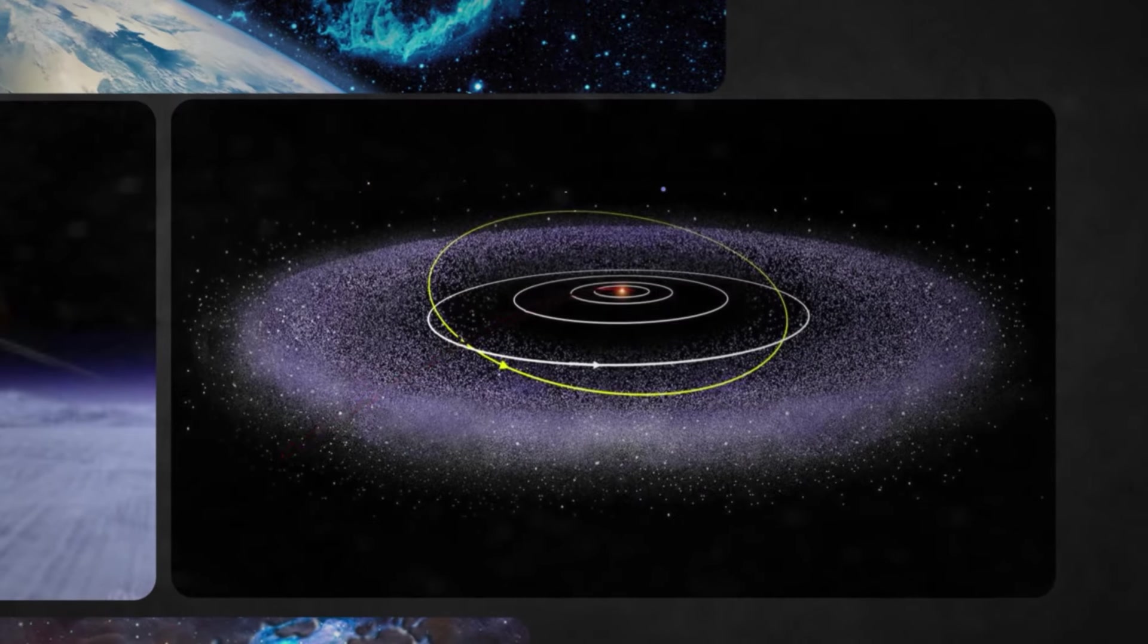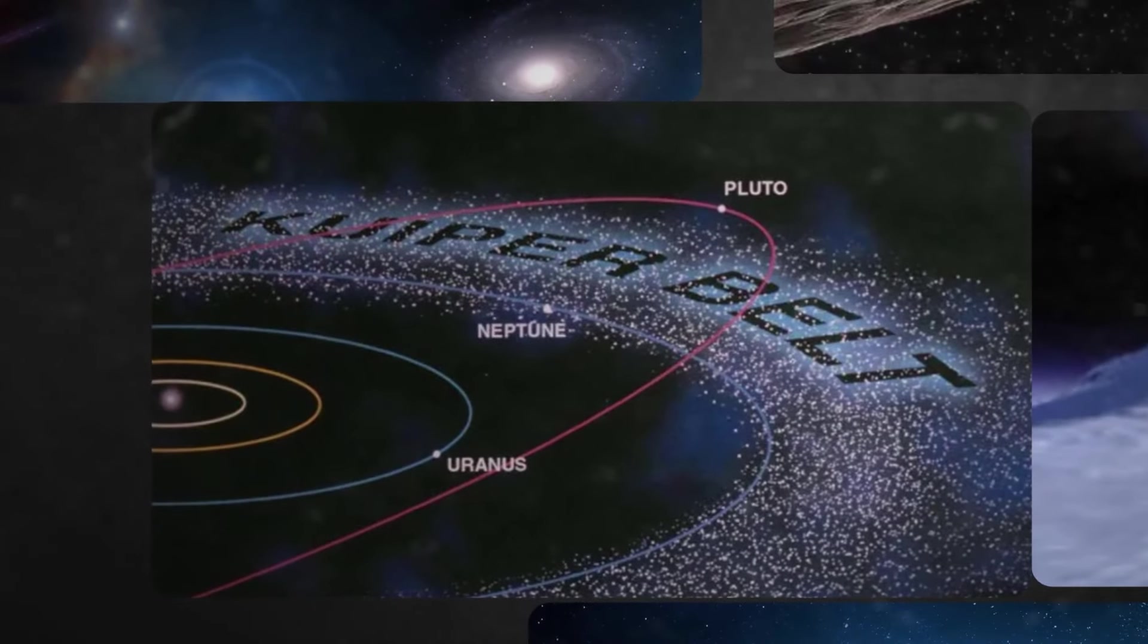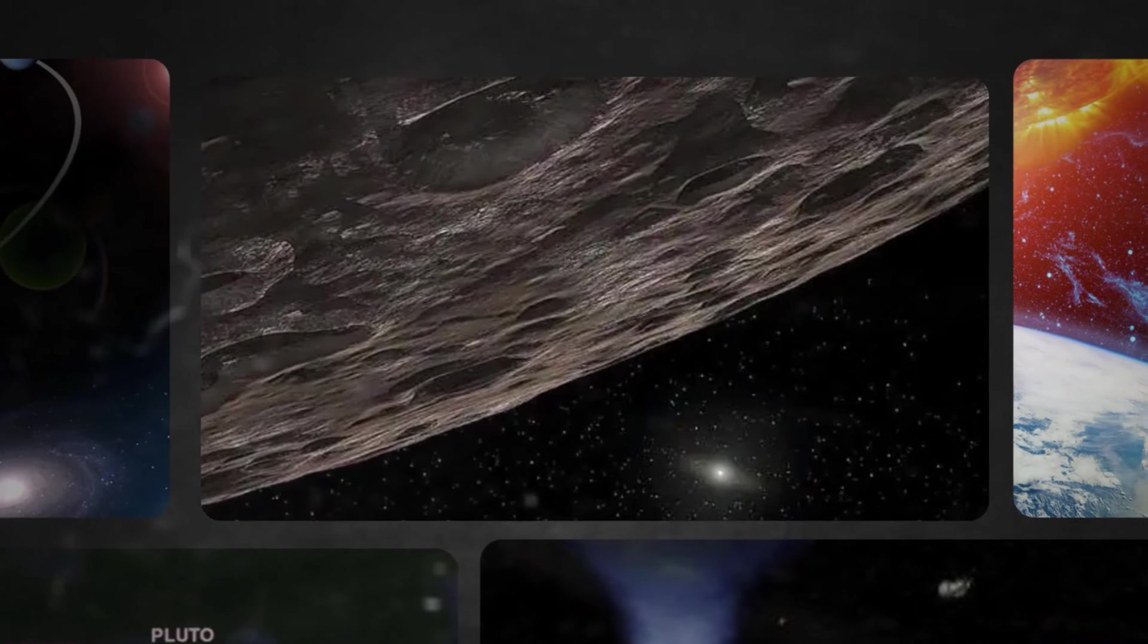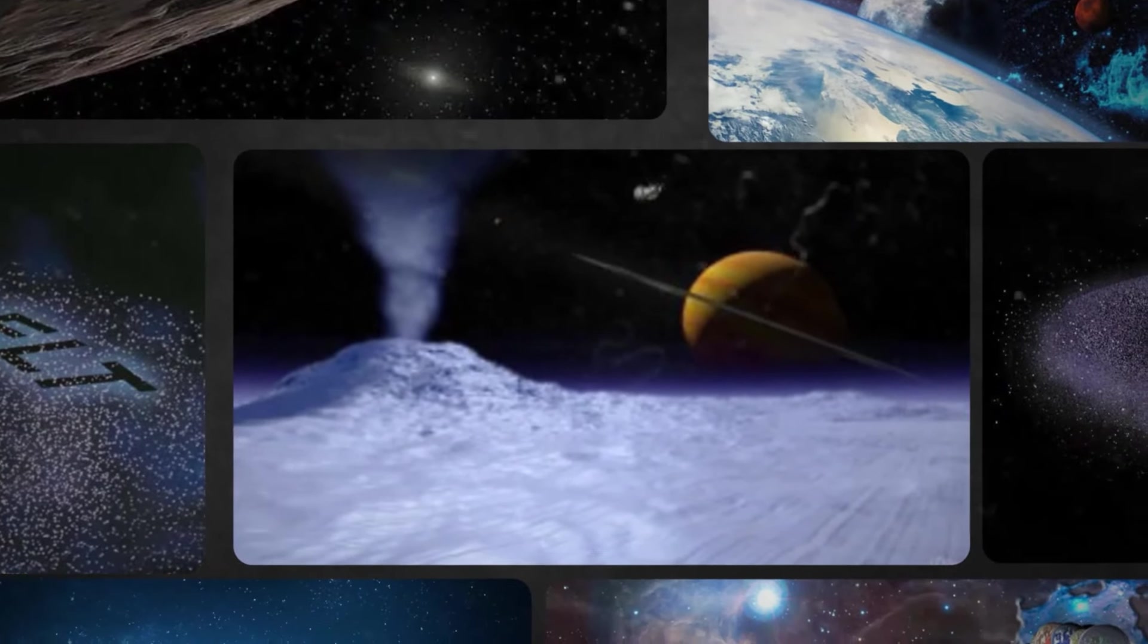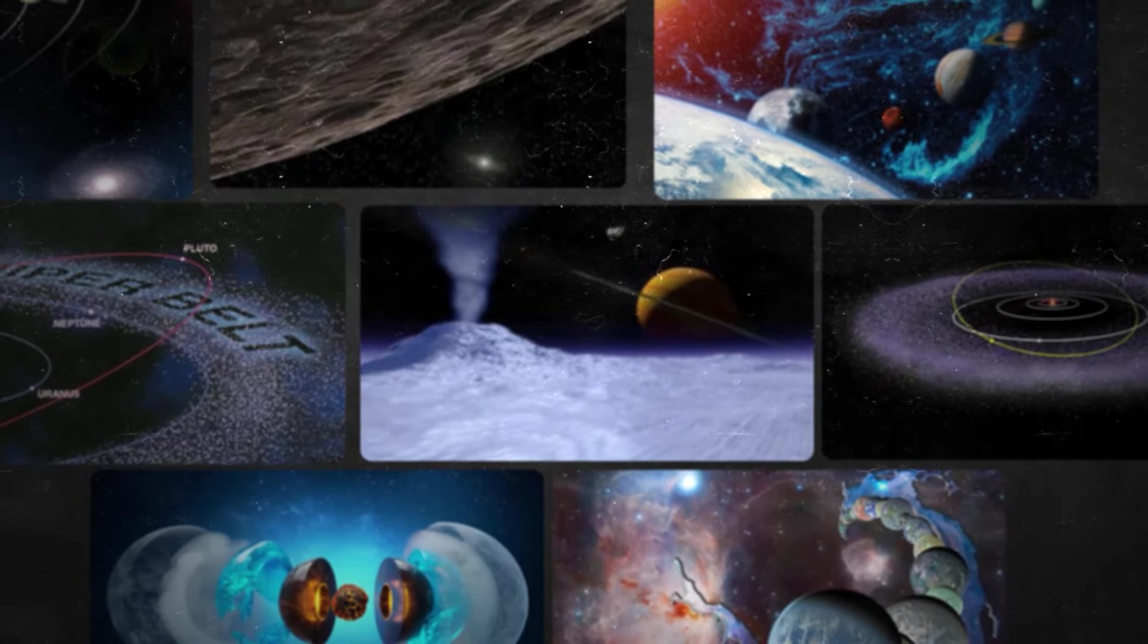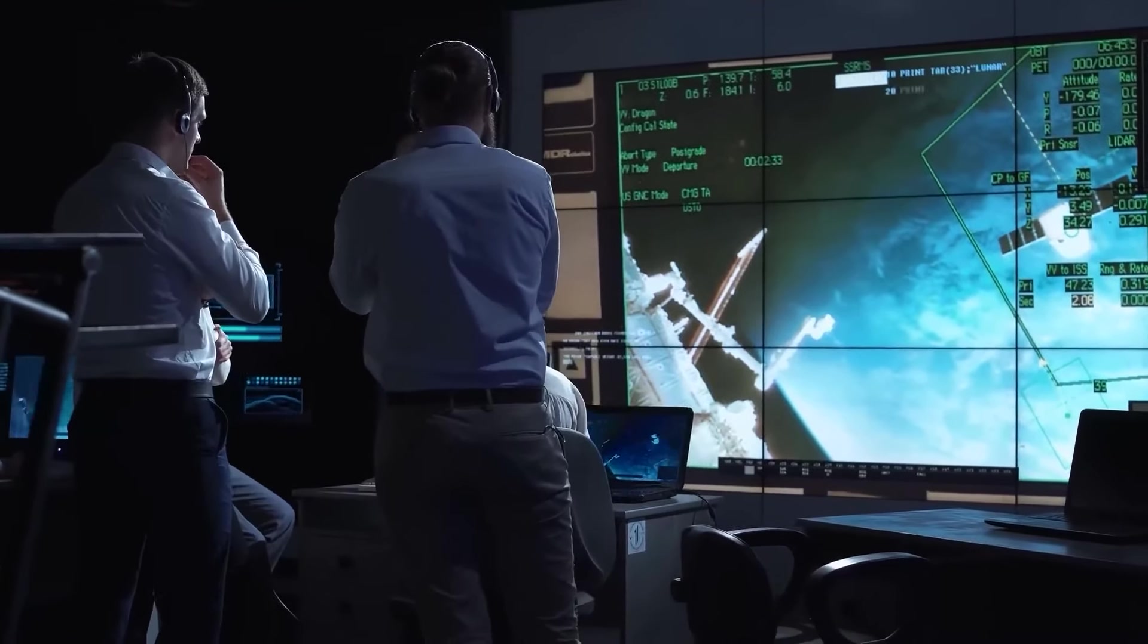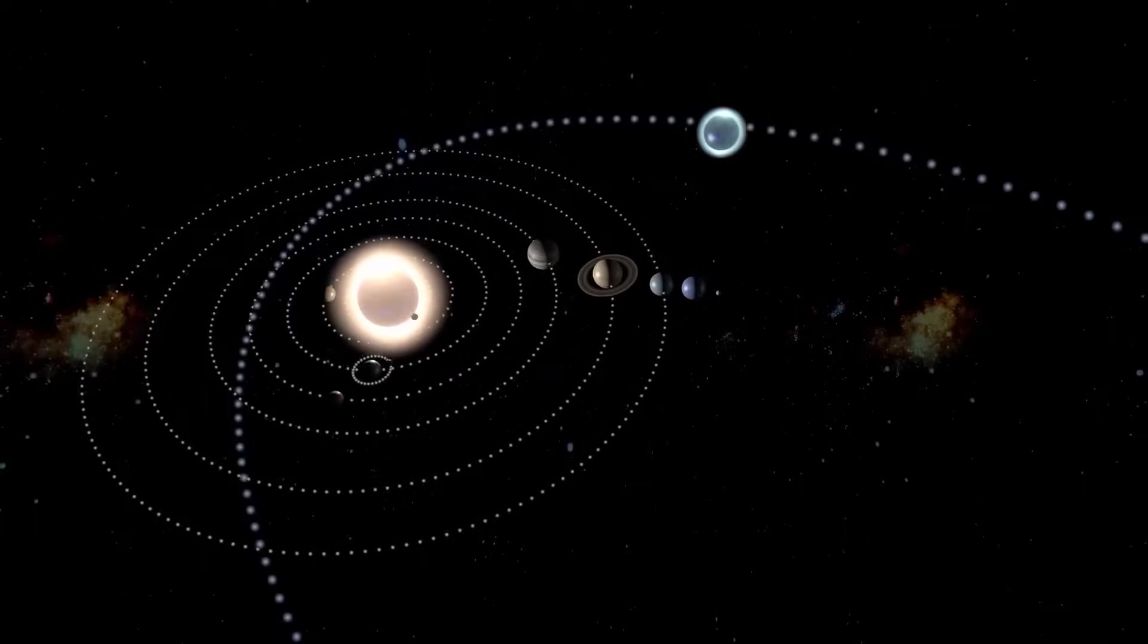On the other hand, Kuiper belt objects are icy bodies situated beyond Neptune in the Kuiper belt, a region similar to the asteroid belt but containing icy objects. Kuiper belt objects such as Pluto and Eris are composed of frozen volatiles like methane, ammonia and water ice. They offer scientists a glimpse into the primordial material that formed the outer solar system and contribute to our understanding of its composition and history.